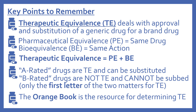Just some key points to remember about therapeutic equivalence: Therapeutic equivalence deals with the approval and substitution of a generic drug for a brand drug. Pharmaceutical equivalence means the products are basically the same drug. Bioequivalence means they have the same action. Therapeutic equivalence must have both pharmaceutical equivalence and bioequivalence. A-rated drugs are therapeutically equivalent and can be substituted. B-rated drugs are not therapeutically equivalent and cannot be substituted. Only the first letter of the two-letter code matters for therapeutic equivalence. And the Orange Book is the resource for determining therapeutic equivalence.